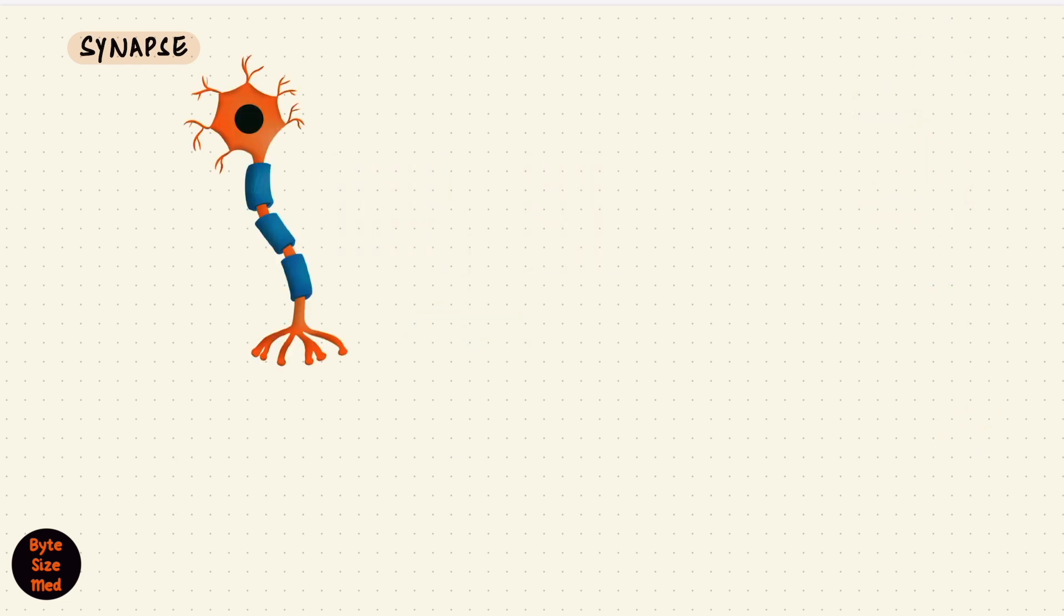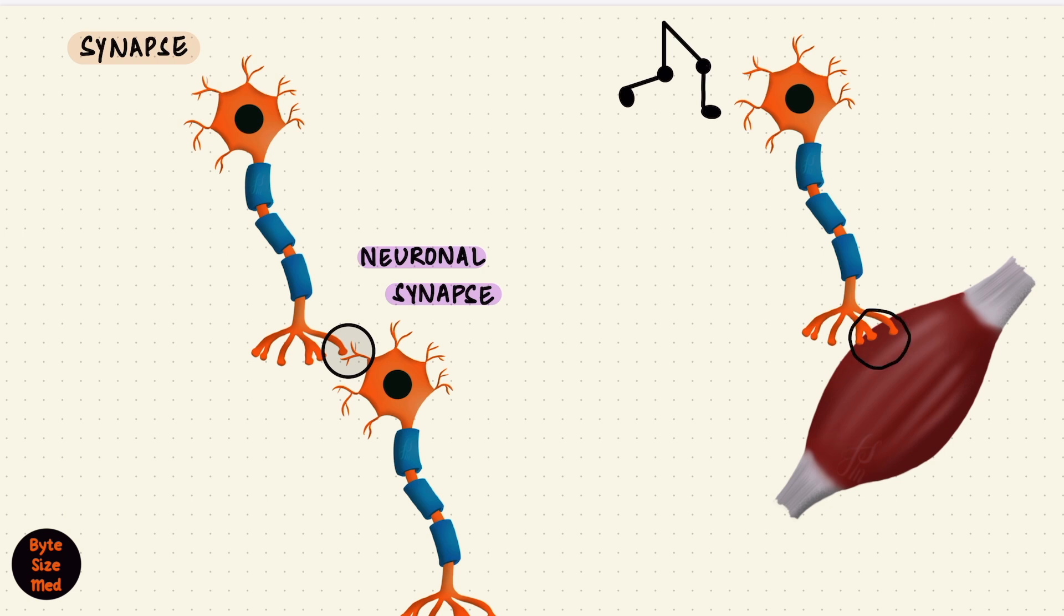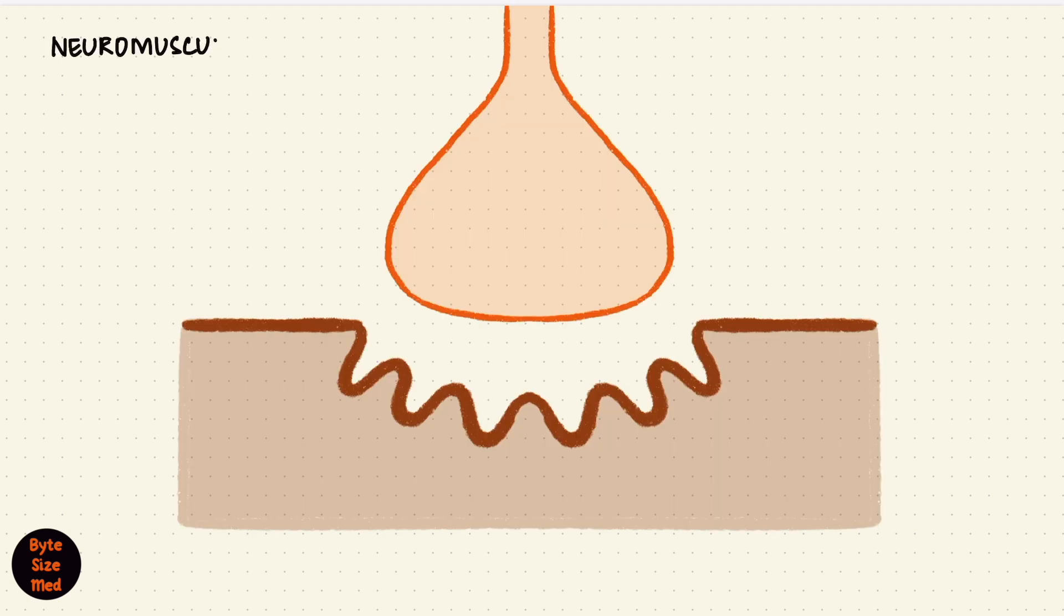Neurons have to communicate with other neurons, yes, but they also need to talk to other cells. For a limb movement to happen, a neuron needs to send a signal to the muscle fibers of a skeletal muscle for them to contract. This is also a synapse, a neuromuscular synapse, and the junction between the two is the neuromuscular junction.